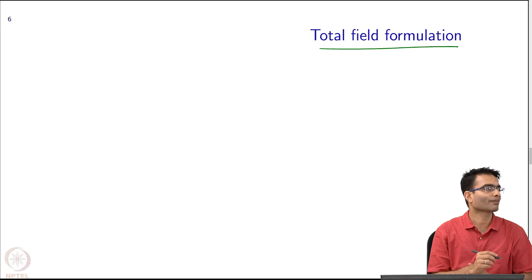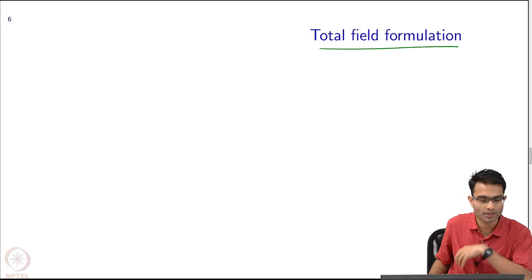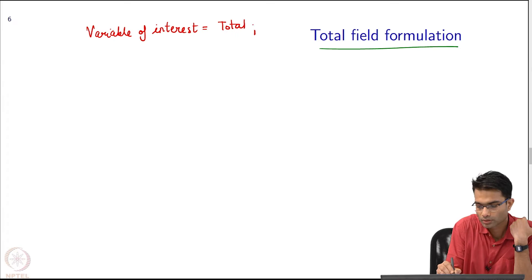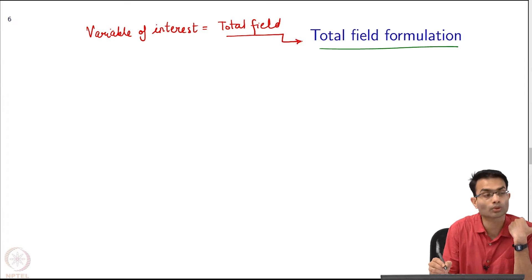This will look like a very obvious thing because so far we have been only talking about total field formulation. So what does it mean? It means that the variable of interest equals total field and that is why it is called the total field formulation.